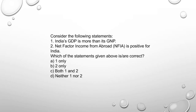Next: Consider the following statements. India's GDP is more than its GNP. GNP equals GDP plus net factor income from abroad. India has a negative net factor income, meaning imports exceed exports — trade deficit. So GDP is more than GNP; option 1 is correct. Factor income from abroad is negative for India due to the trade deficit.